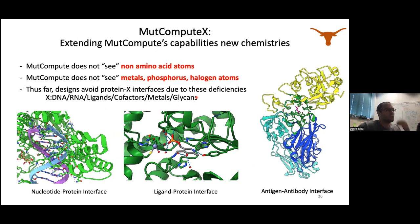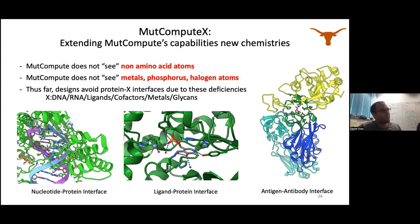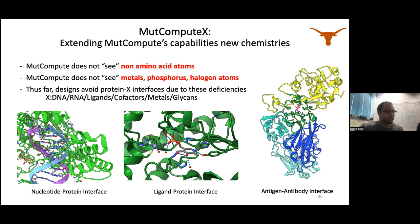Now transitioning to MuteComputeX. MuteCompute was only able to see amino acid atoms — unable to see non-amino acid atoms. At a protein-nucleotide interface like the polymerase I showed, the masked microenvironments couldn't see atoms belonging to DNA, RNA, or nucleotides. Similarly, at a protein active site like serine dehydratase or PETase, the model couldn't see cofactors, metals, ligands, glycans. For vaccine, antibody, and therapeutic applications, proteins are often heavily glycosylated — the model couldn't see sugar molecules as seen in antigen-antibody interactions.